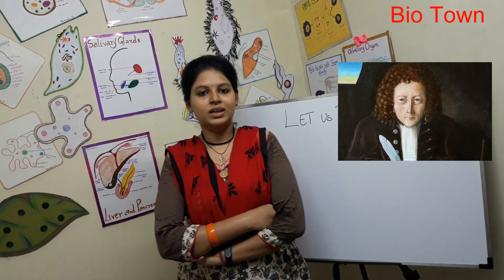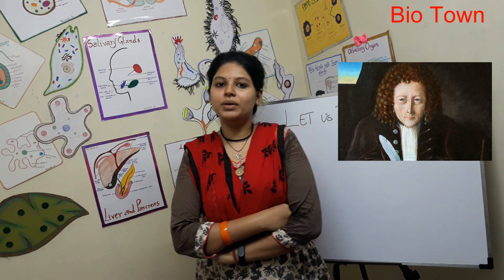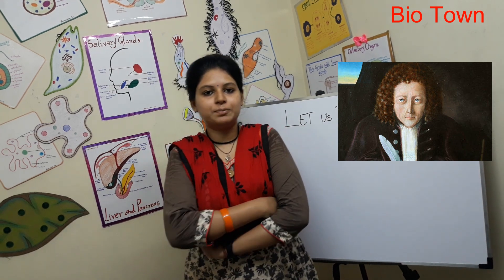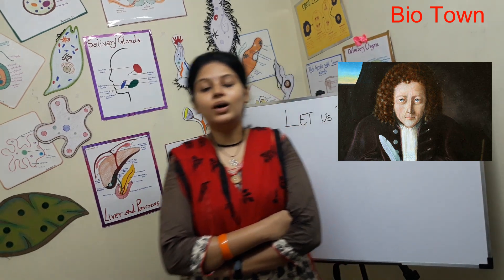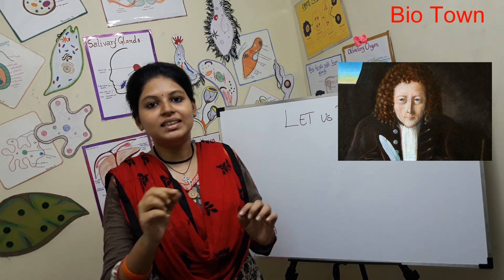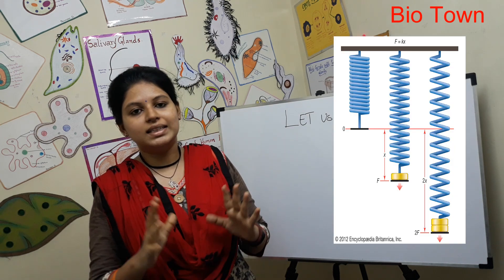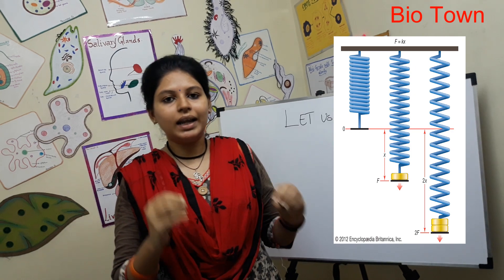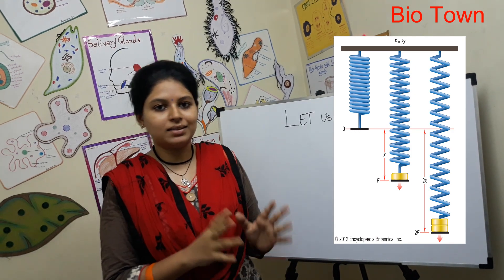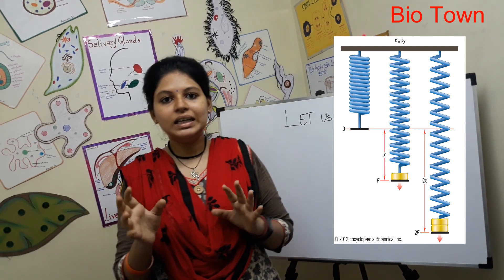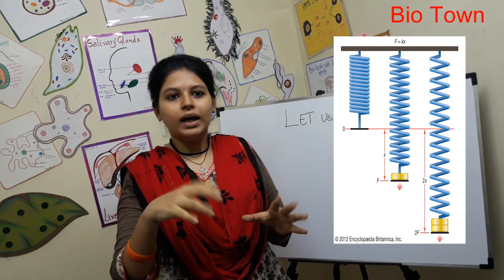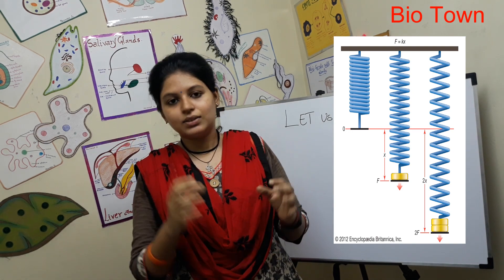Today we'll look at an interesting personality — Robert Hooke, who is the father of cell theory. Robert Hooke was born in England in the year 1635, in the 17th century. He was a great physicist and mathematician, and in his early 30s he conducted research in physics.